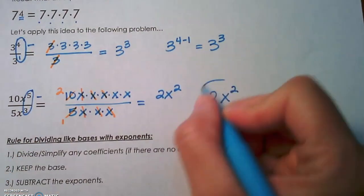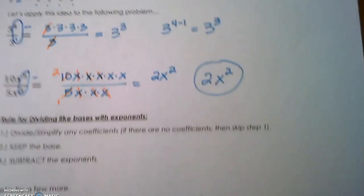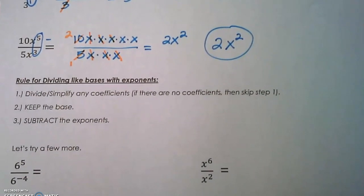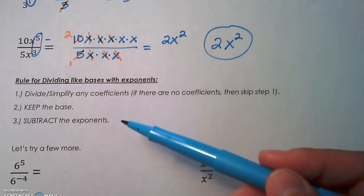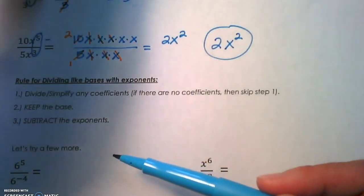So the rules are: 1) Divide or simplify the coefficients. 2) Keep the base. 3) Subtract the exponents. Again, if you don't have coefficients, you don't have to do step 1.